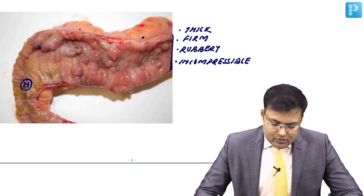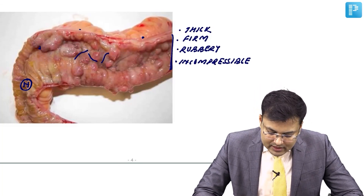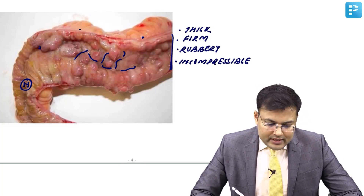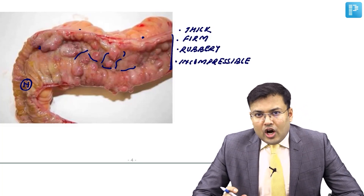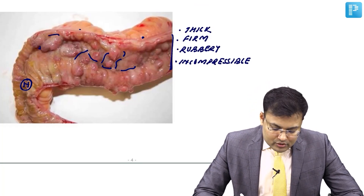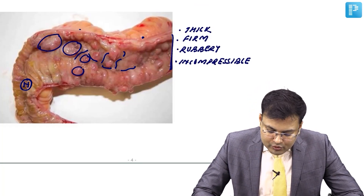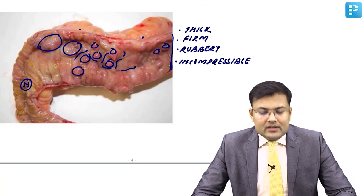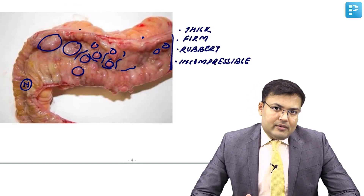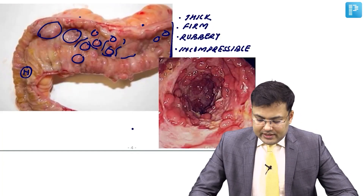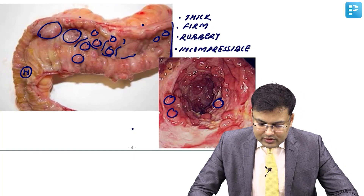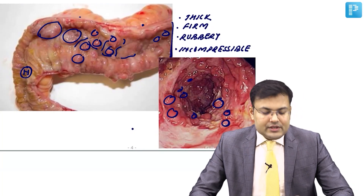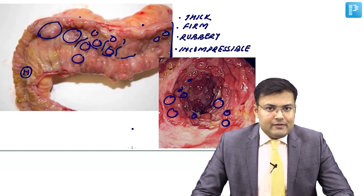Linear ulcers collide with transverse ulcers, and there is normal mucosa in between. This combination of intersecting linear and transverse ulcers with islands of normal mucosa gives a characteristic cobblestone appearance. All these pathological changes are very important and frequently asked in exams.